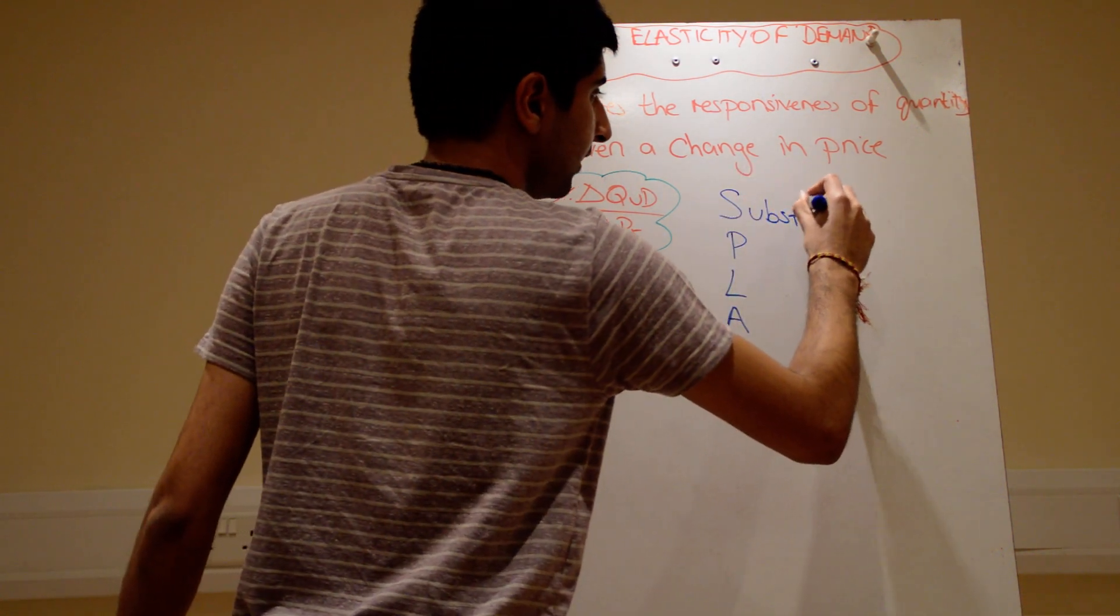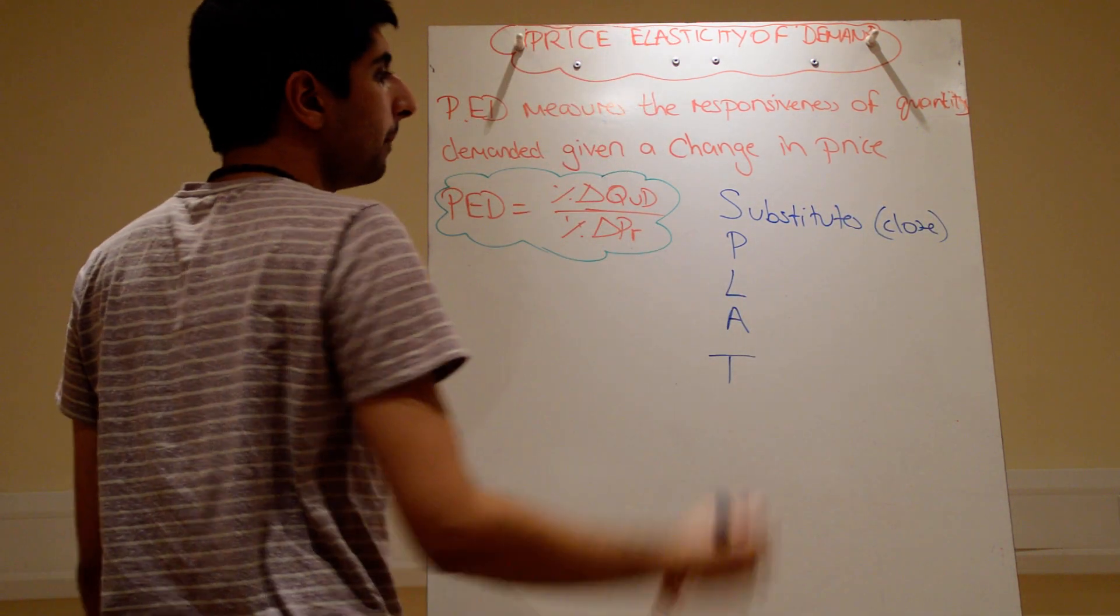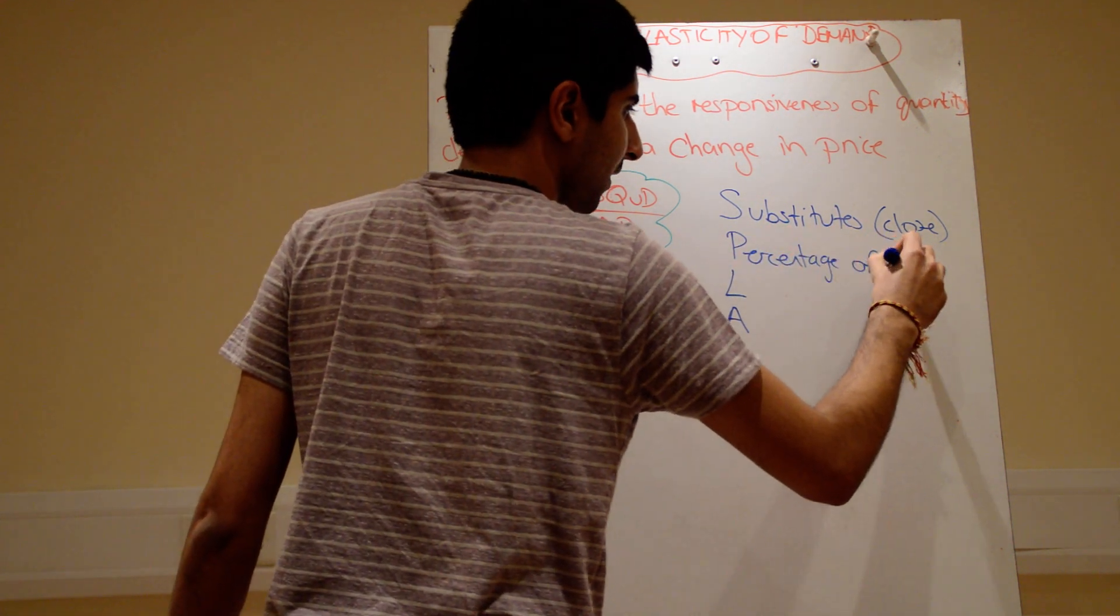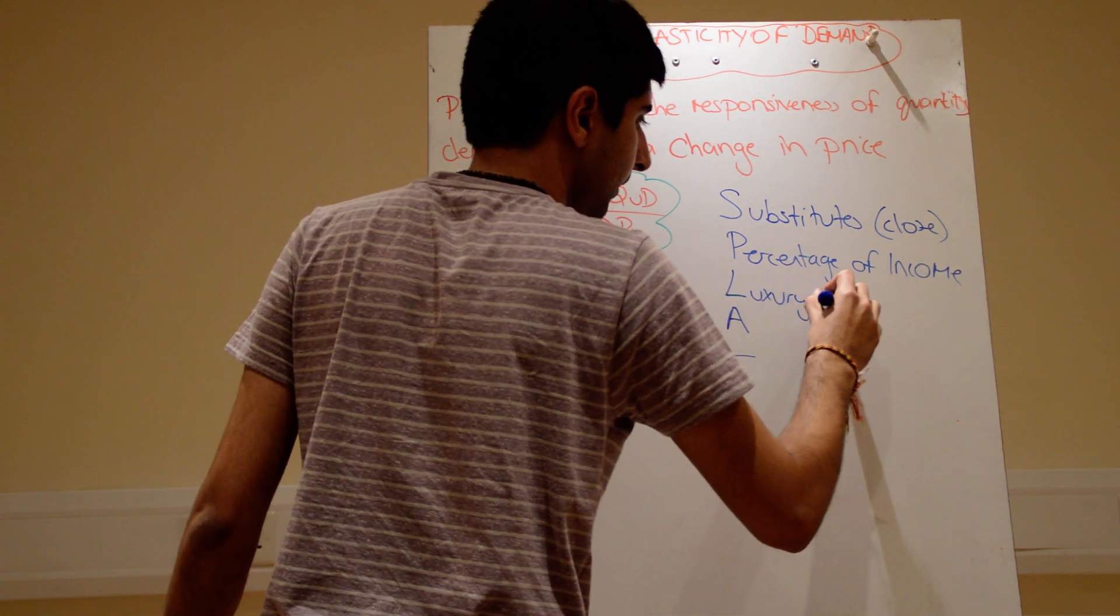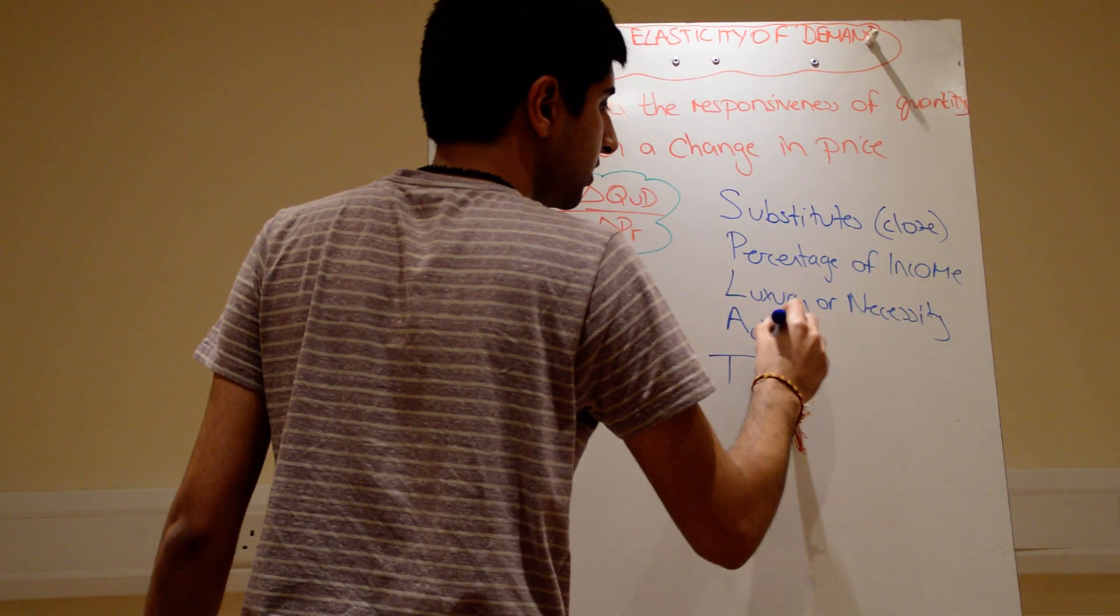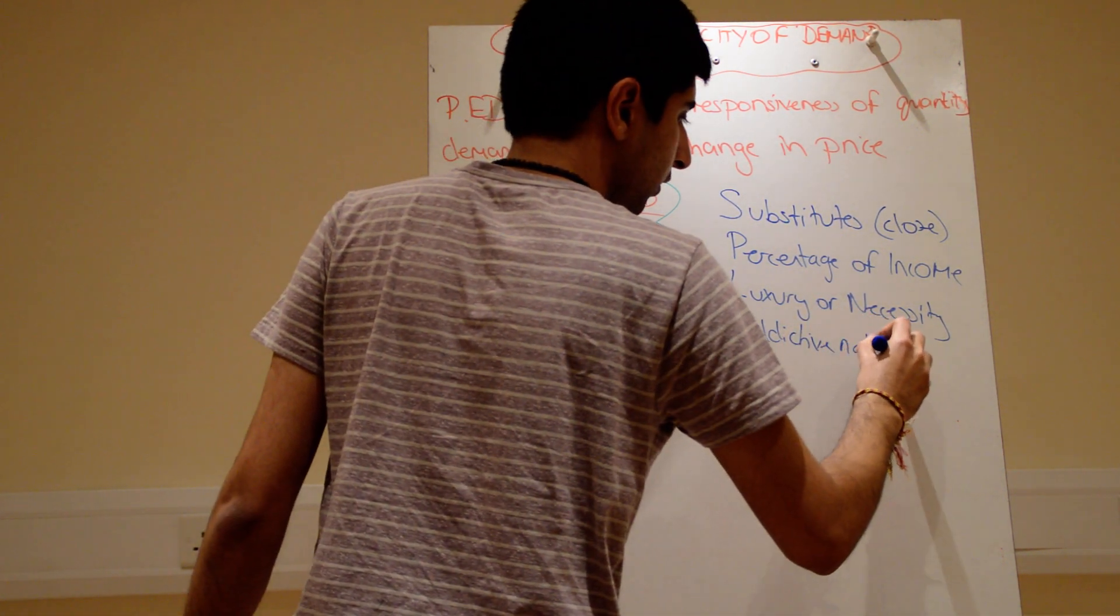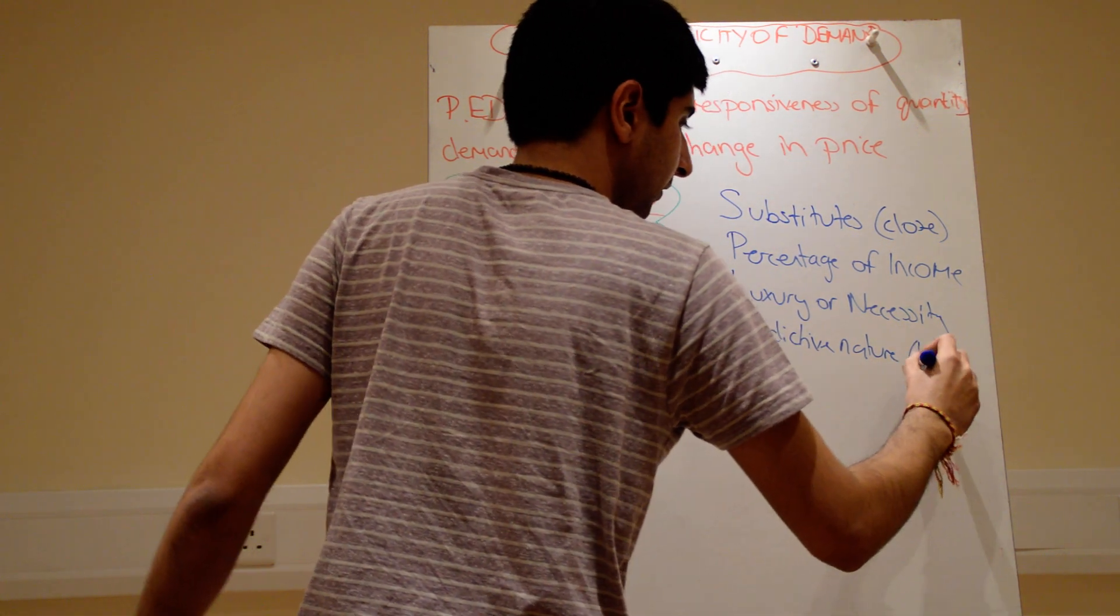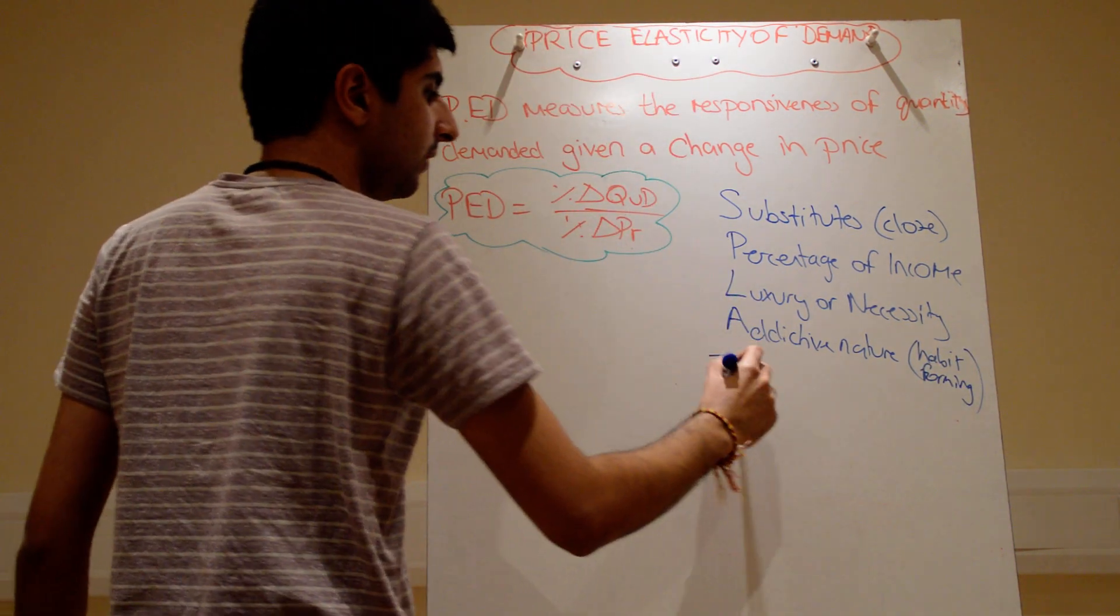S is for substitutes. Specifically, the number of close substitutes. P is for percentage of income. L is for luxury or necessity. A is for the addictive nature. Addictive nature or habit forming. You might just have a habit of purchasing that specific type of good. And T is just time period.